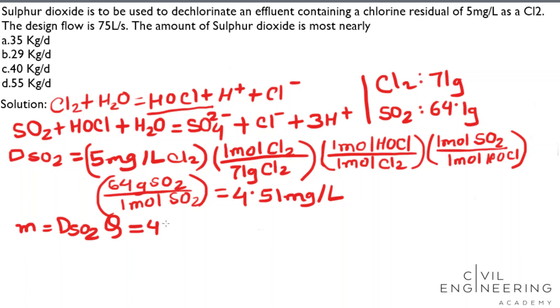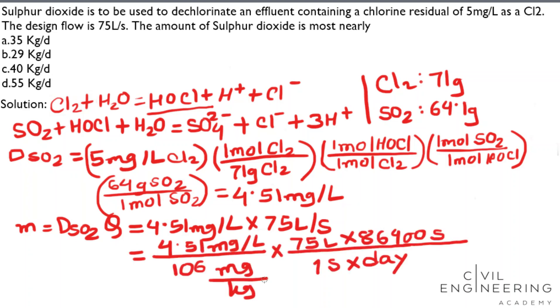Here, 4.51 milligram per liter multiplied by our design flow 75 liter per second. I convert milligram into kilogram and seconds into day. After calculation, I get the value 29.22 kilogram per day.